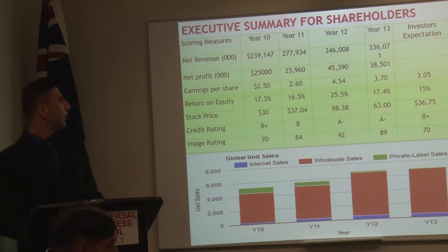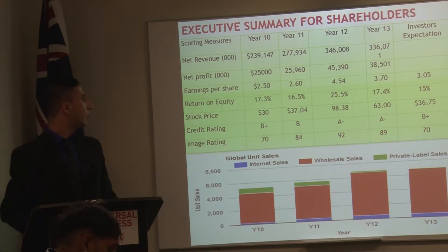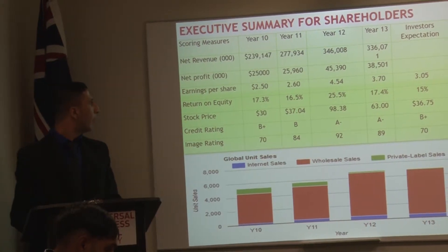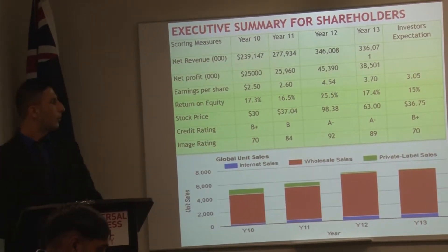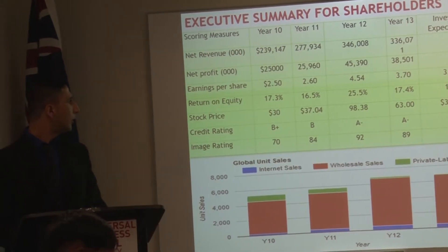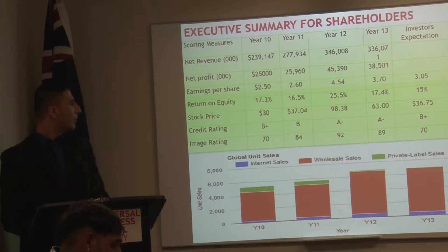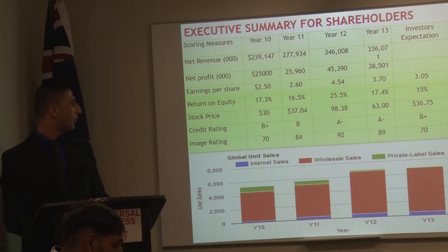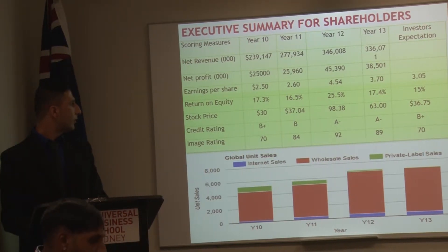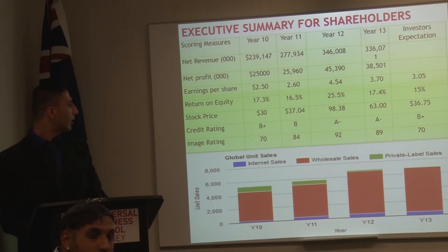Because our net revenue is decreasing, our net profit is also decreasing, and our earnings per share and return on equity are also decreasing. Our image rating is also decreasing because our stock price is going down, which is why our image rating and credit rating are also negative.